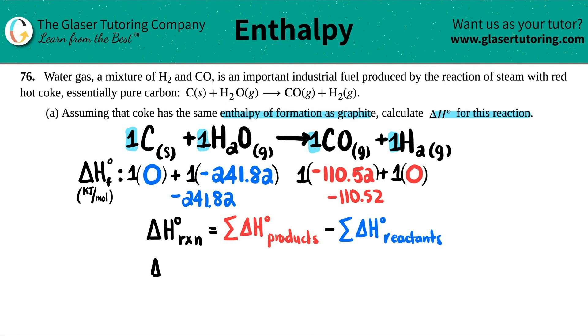Now I'm ready to produce my equation. ΔH for the entire reaction is products minus reactants, so negative 110.52 minus negative 241.82.